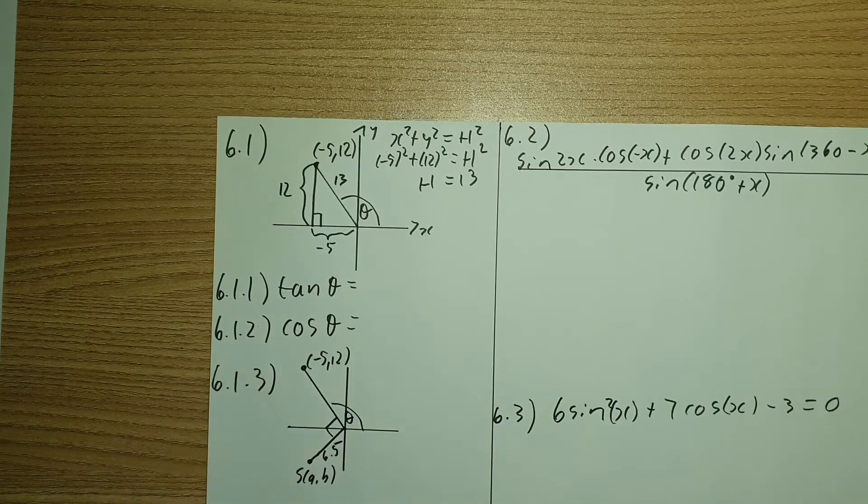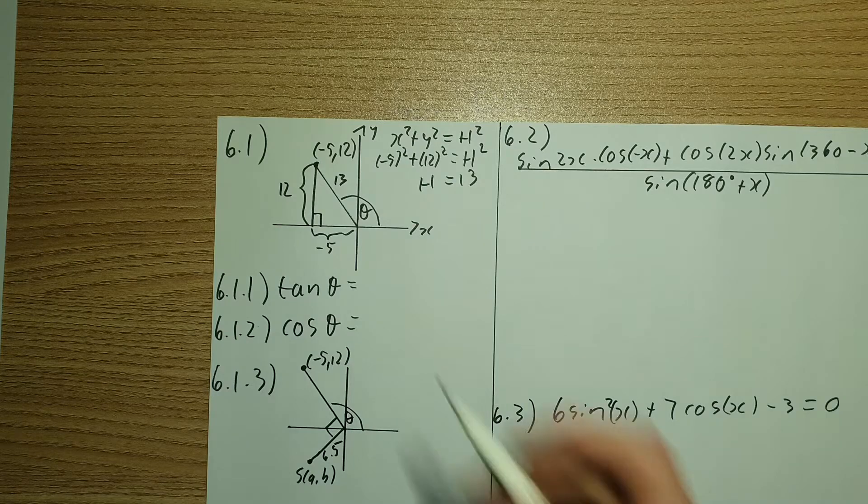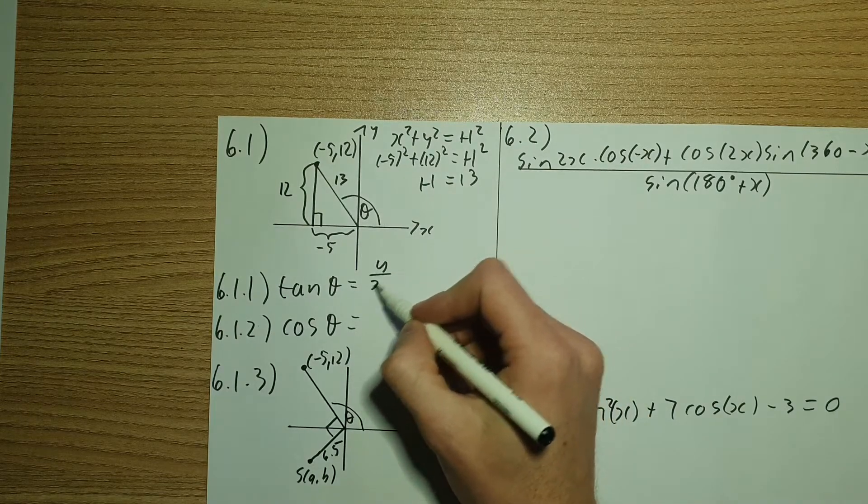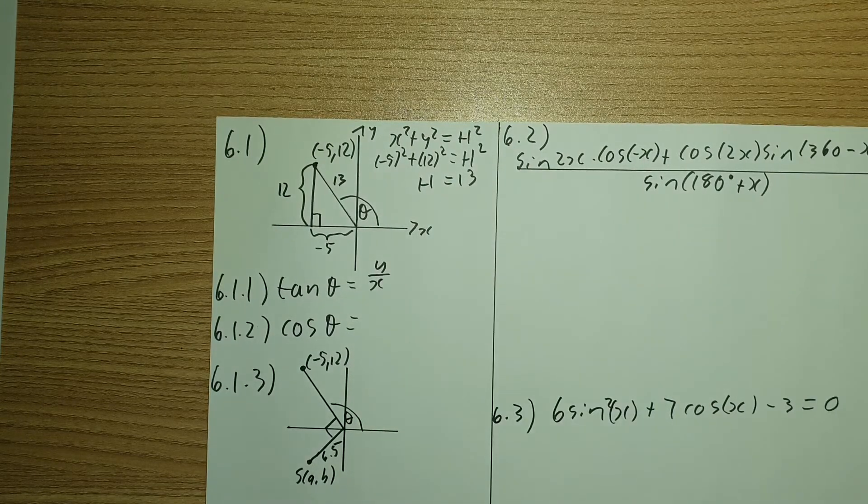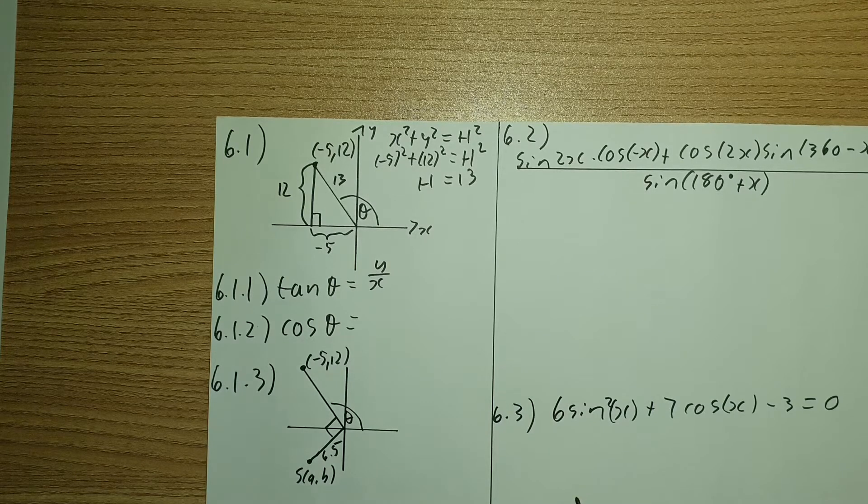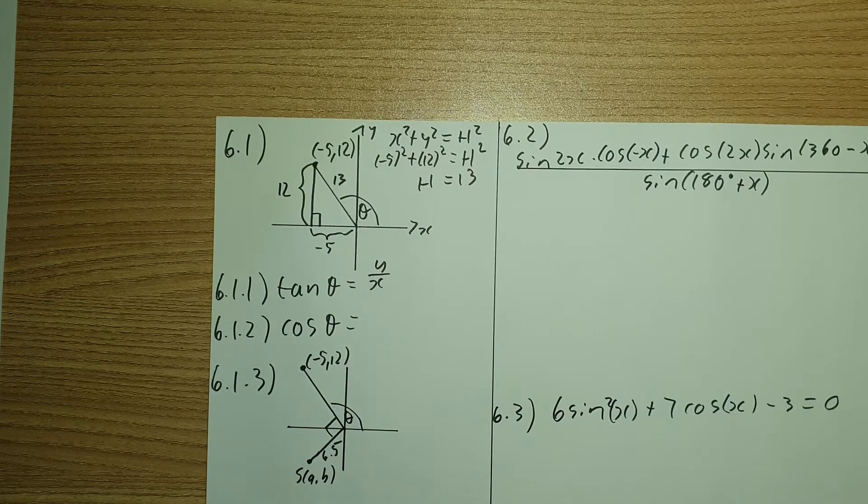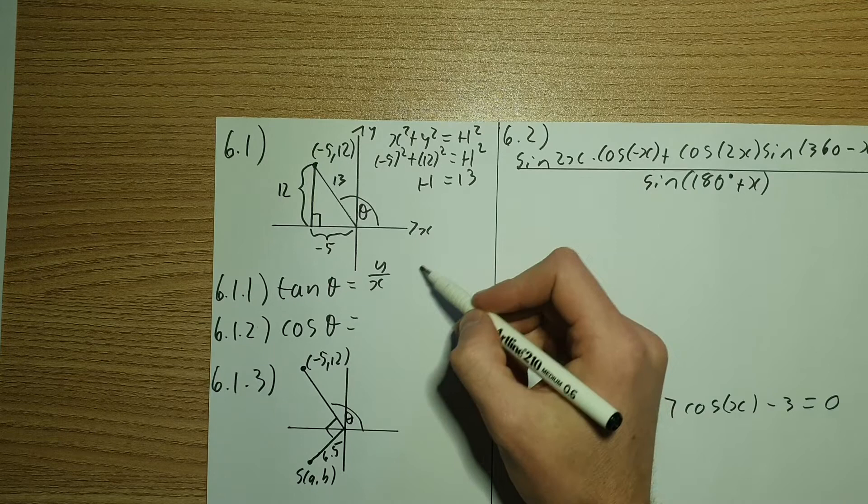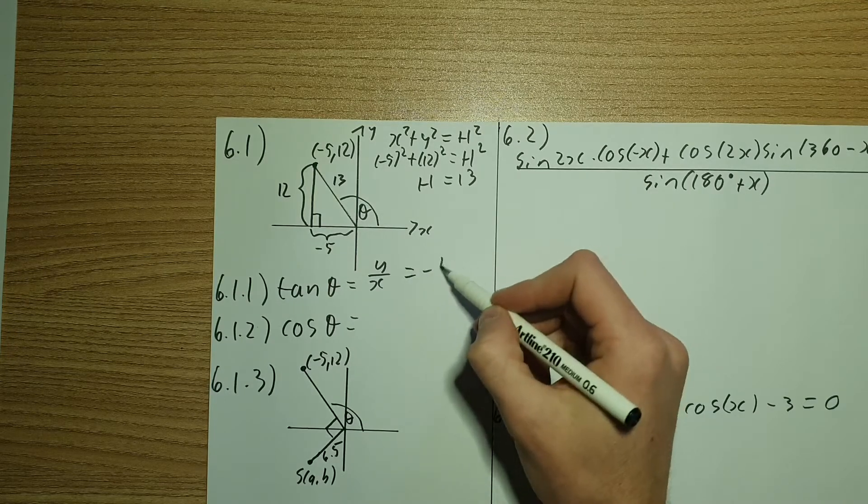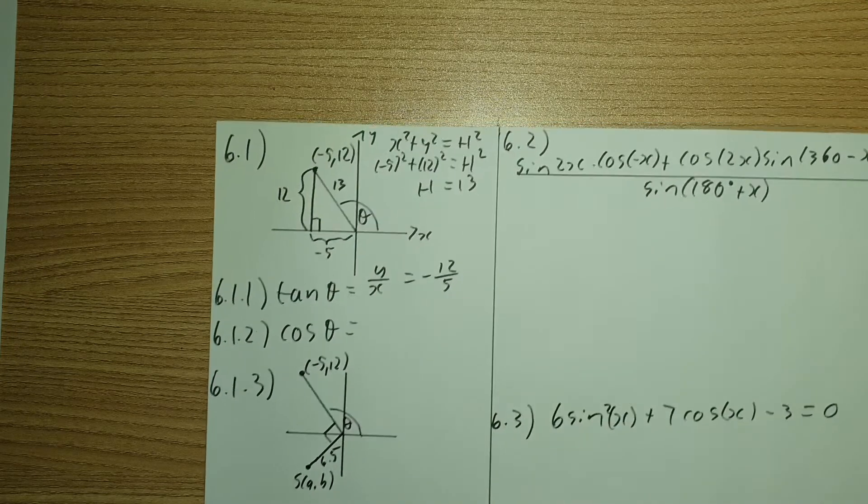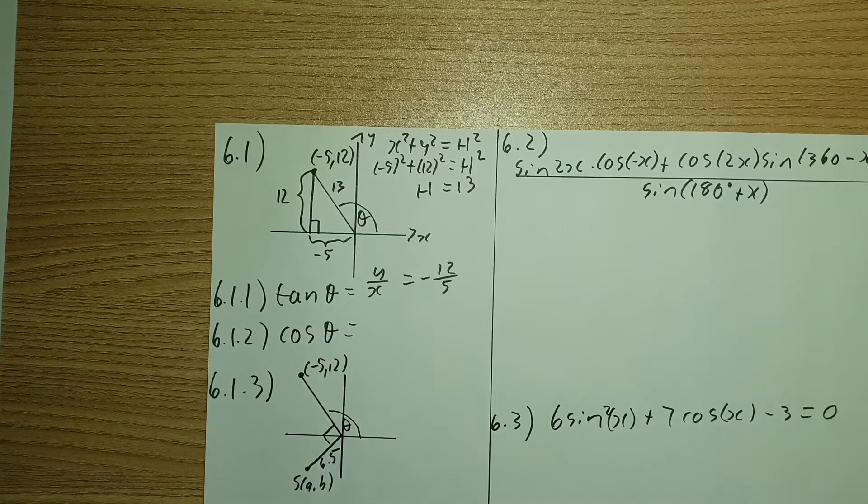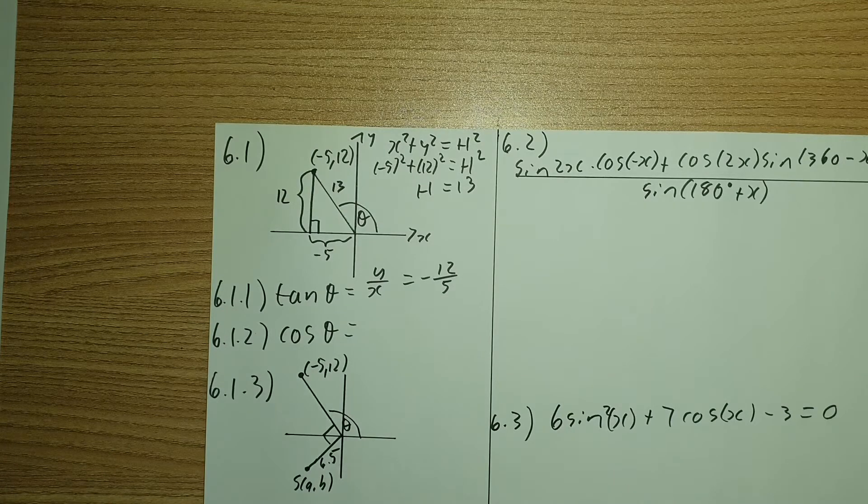So that's x squared plus y squared equals to my hypotenuse squared. You can call it r as well. Thus we're going to have negative 5 squared plus 12 squared equals h squared. You can plug that into your calculator and you should come down to a value for h to be 13.